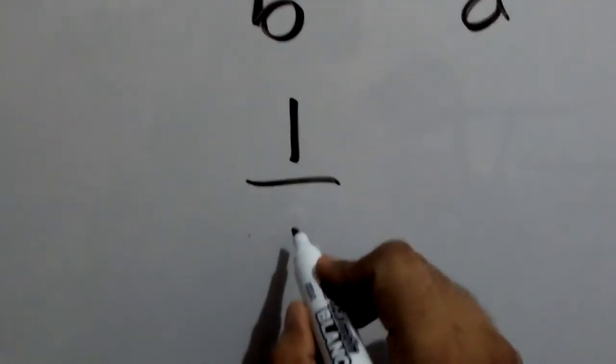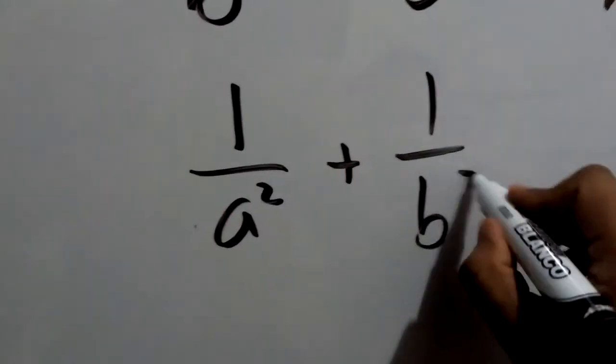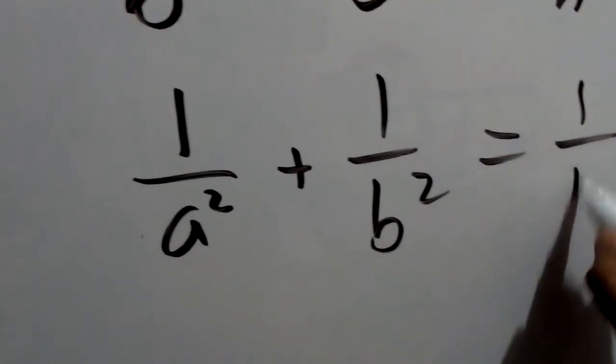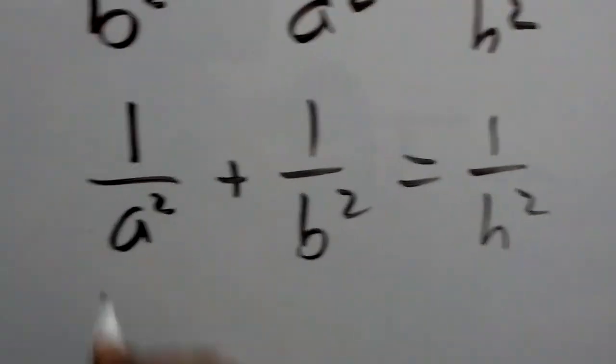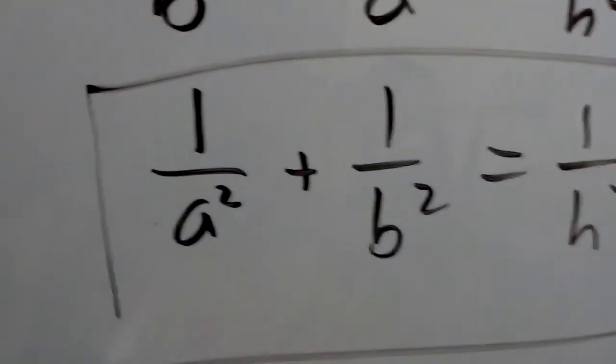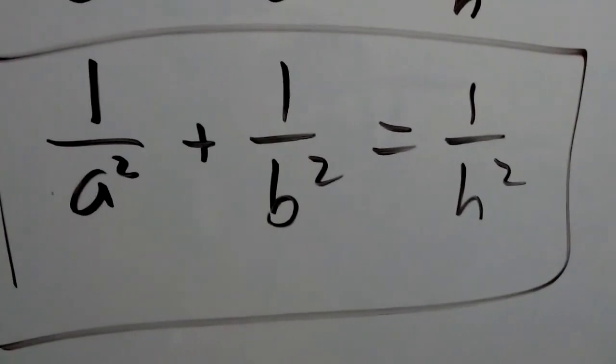And reorder just for a better looking formula. And voila, there you have this. This is the so-called inverse Pythagorean theorem.